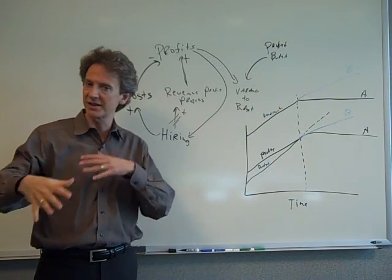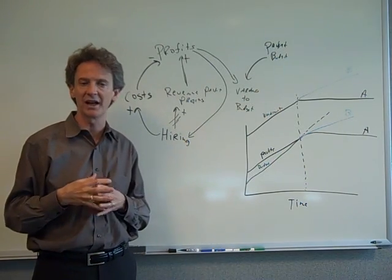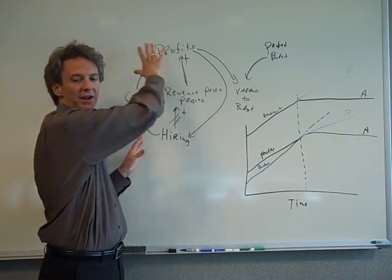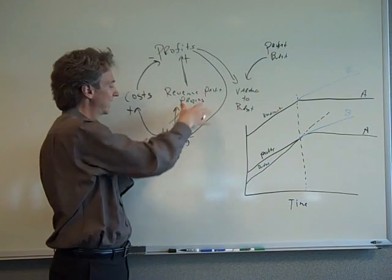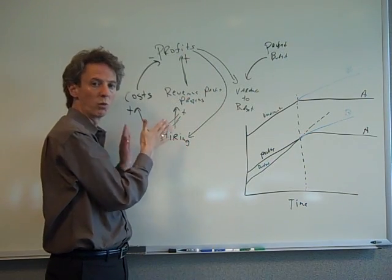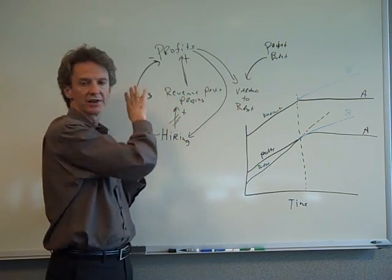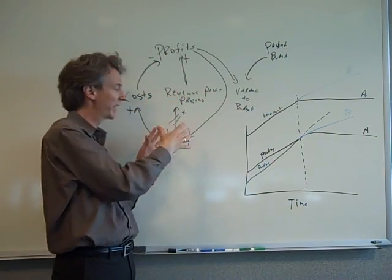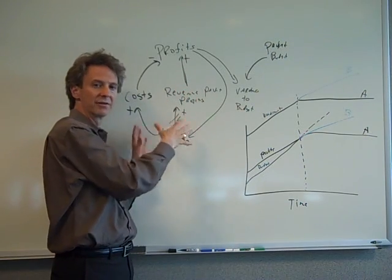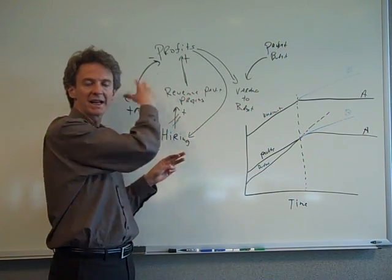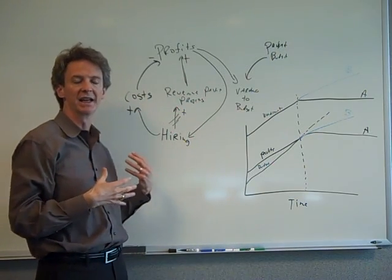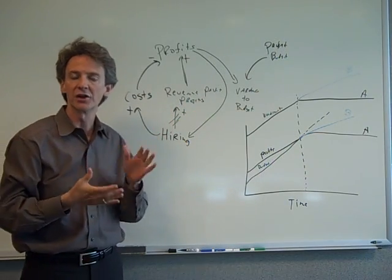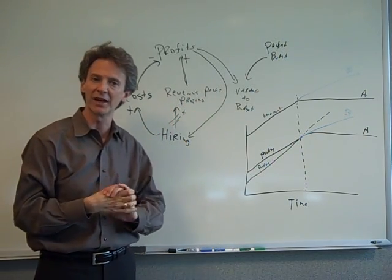So that is just another example of changing the system. The takeaways here are one, be conscious of the cause and effect relationships, which are basically the decision rules, like when do you hire. Two is understand the complex relationships between the cause and effect relationships that you might kick off by the kinds of ways you make decisions. And three, recognize dysfunctions when they happen in your decision making and change the system to perform better. So I hope that was helpful and informative and I will talk to you next time. Thanks.